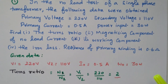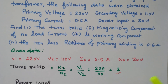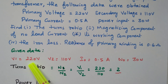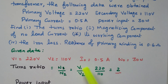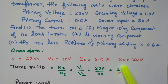First we will analyze the given data. V1 is 220 volts, secondary voltage is 110 volts. The no-load current — under no-load condition, current taken by the primary — is 0.5 ampere. Power input to the primary winding under no-load condition is 30 watts.